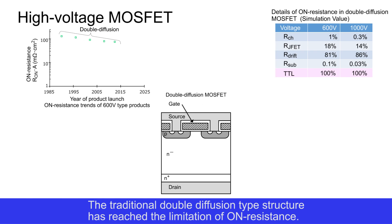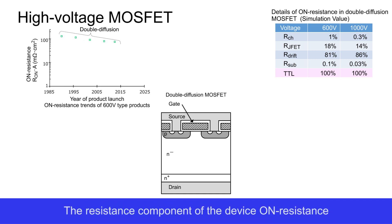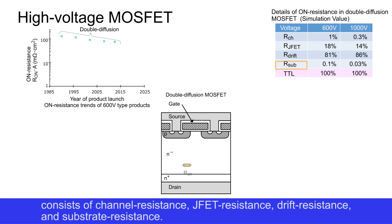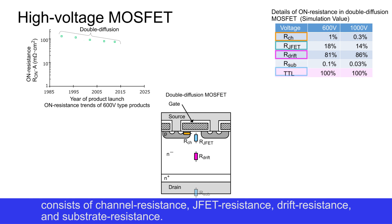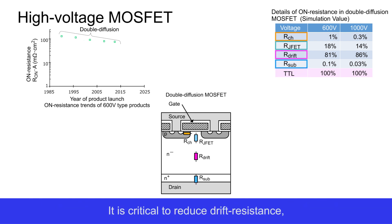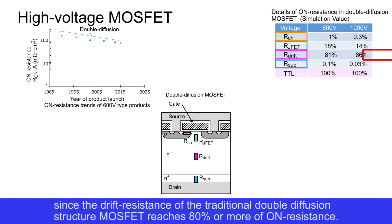The traditional double diffusion type structure has reached the limitation of on-resistance. The resistance component of on-resistance consists of channel resistance, J-FET resistance, drift resistance, and substrate resistance. It is critical to reduce drift resistance, since the drift resistance of the traditional double diffusion structure MOSFET reaches 80% or more of on-resistance.